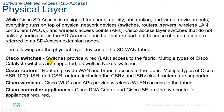Switches provide wired LAN access to the fabric. Multiple types of Cisco switches — Catalyst switches as well as Nexus switches — are supported. This comprises the physical layer, which is essentially the tangible component or hardware part of the SD-Access solution.